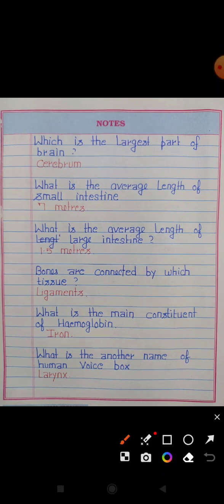Which is the largest part of the brain? Answer: Cerebrum. What is the average length of the small intestine? Answer: 7 meters.